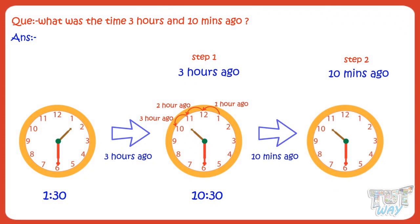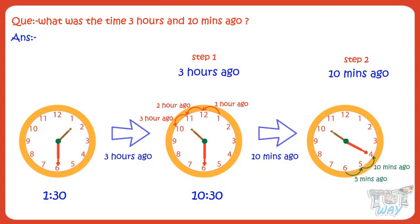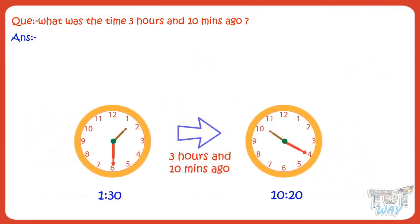Now, calculate what was the time 10 minutes ago. For that, move back the minute hand 10 minutes — move back from 6 to 5, and then 5 to 4. So 3 hours and 10 minutes ago, the time would be 10:20.